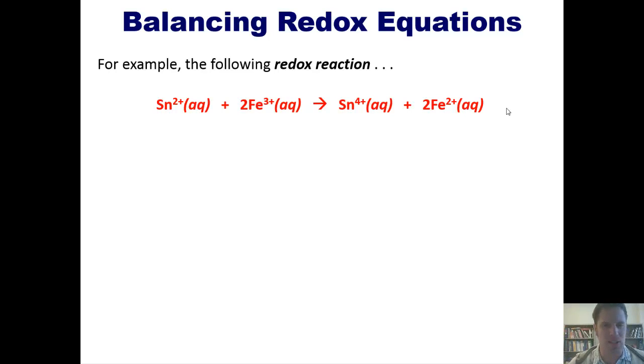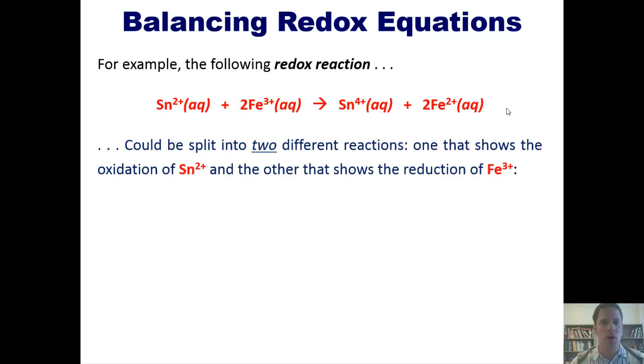So we can actually split this overall redox reaction into two different reactions, one that shows the oxidation of tin, and the other that shows the reduction of iron. How would we do that? Well, we begin by just separating them out like this. In the oxidation step, we've got Sn²⁺ turning to Sn⁴⁺. To balance that charge-wise, we have to put two electrons on the right side. In effect, this shows that what's occurring is each atom of tin is giving off two molar equivalents of electrons.